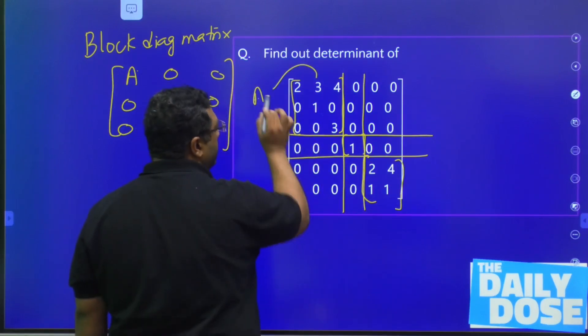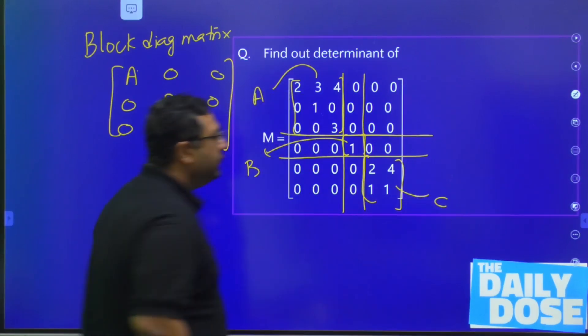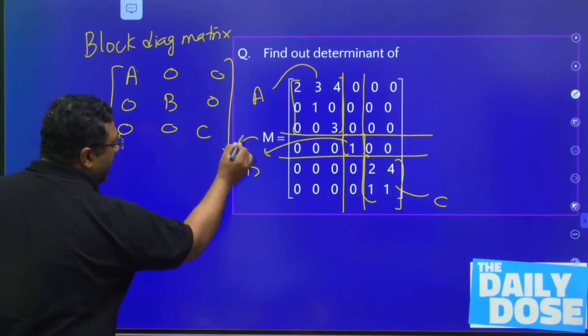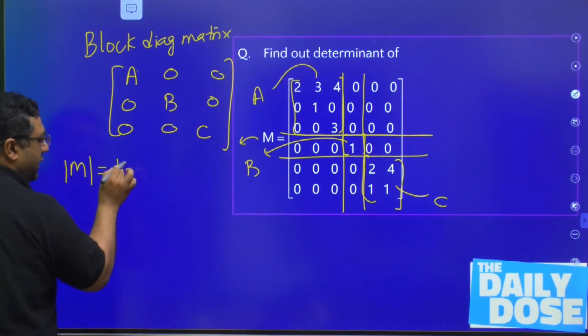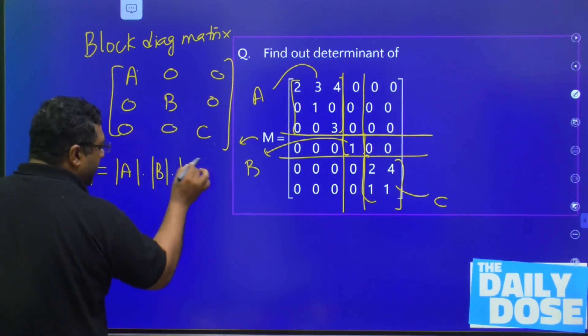So we can say this is A, this is B, and this is C. So in that case, if you want to find out the determinant of M, then determinant of M is given as determinant of A, determinant of B, and determinant of C.